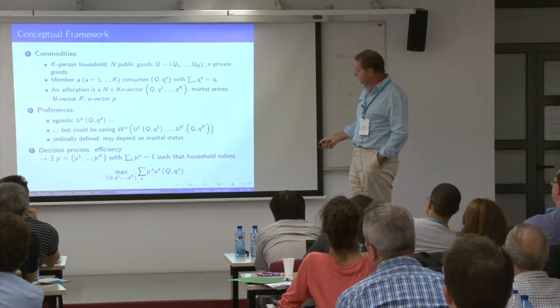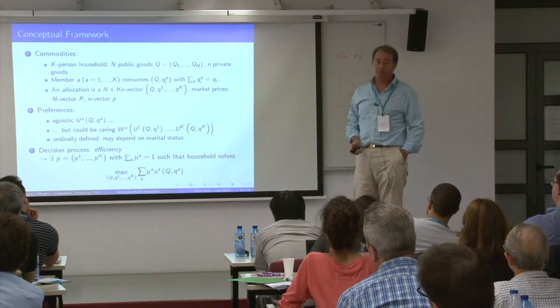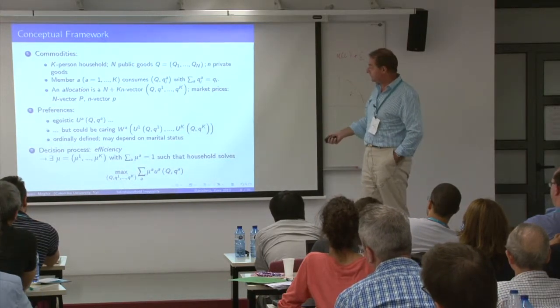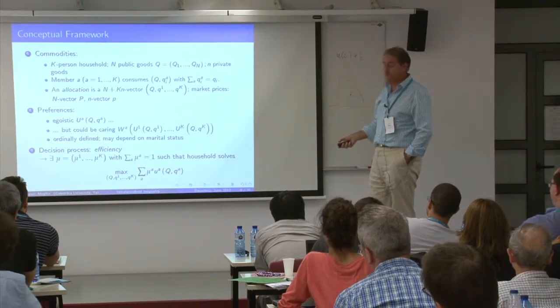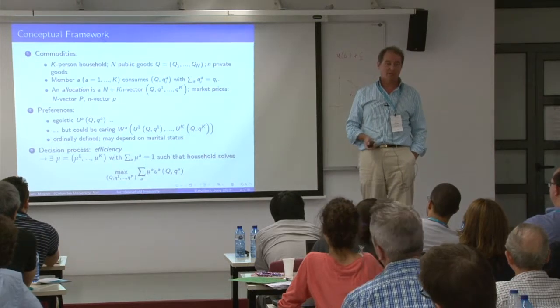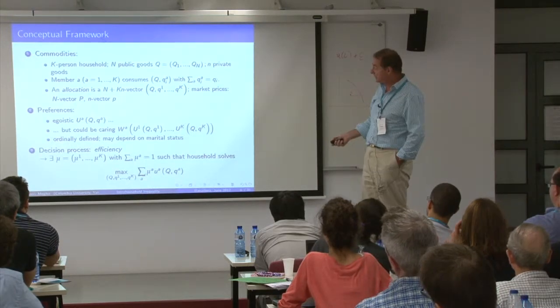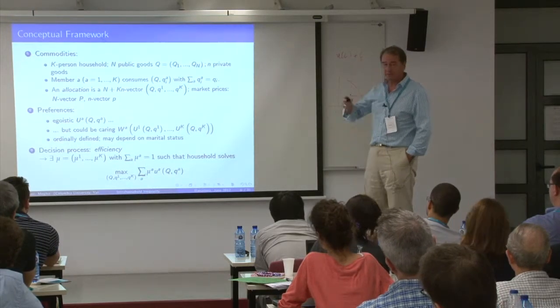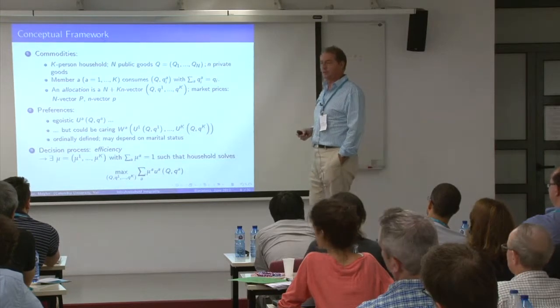Efficiency means that there exist Pareto weights and you're maximizing the weighted sum of utilities. What about those weights? They might be constant — if they are constant, then it's a unitary particular version of the unitary model. But they might depend on anything: prices, incomes, and so on.